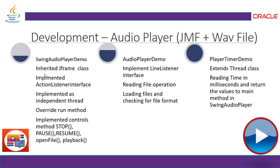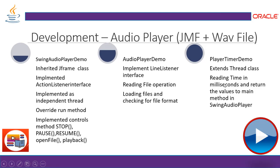The second class, AudioPlayerDemo, is invoked by SwingAudioPlayerDemo. It implements the LineListener interface. The basic objective of this class is to handle file operations — loading the file, initiating instances for audio files — so that during runtime, when we open a file, it gets loaded dynamically. The third class is PlayerTimerDemo, which extends the Thread class for multi-threaded implementation, reading time in milliseconds and returning the value to the main method in SwingAudioPlayer.